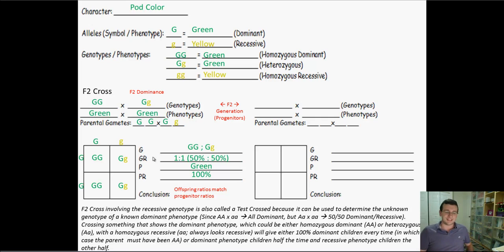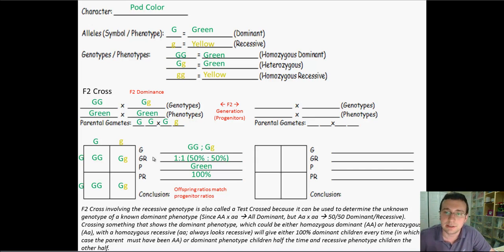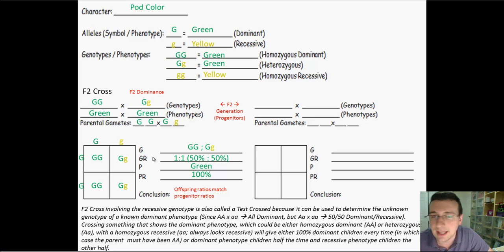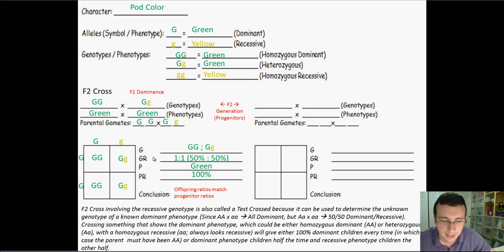The beautiful thing is that when Mendel did this, he made the prediction that's what would happen. He predicted that if he took the hybrid and connected it with the purebred, he would get this 50-50 ratio based on what he had learned. After many tests, that's exactly what he got. He sent letters to a bunch of famous people, but no one really gave him credit until many years later when those letters were rediscovered. Among those famous people was Darwin himself.